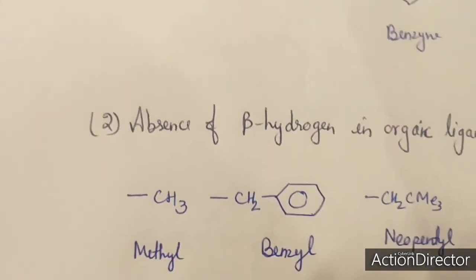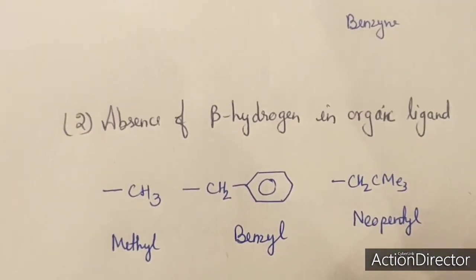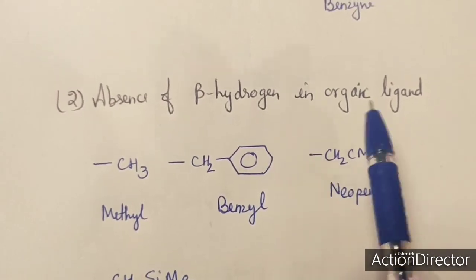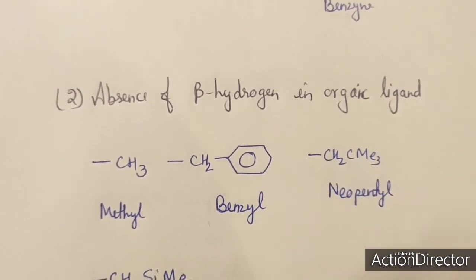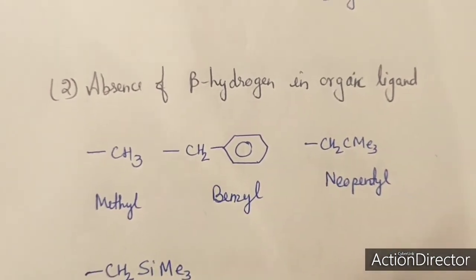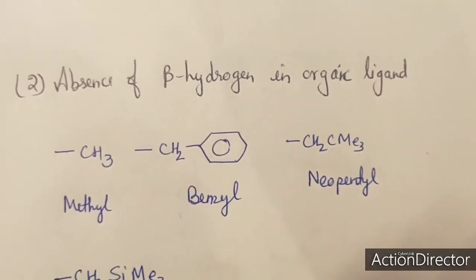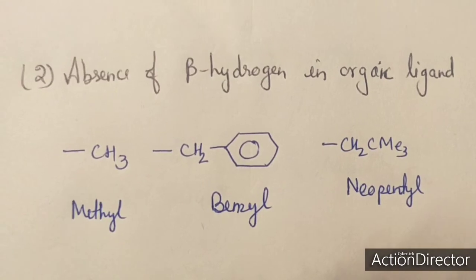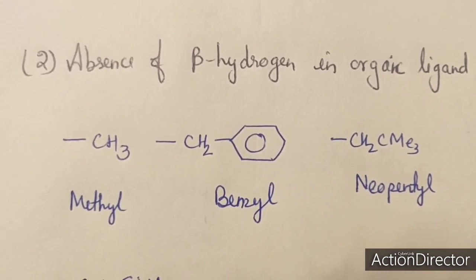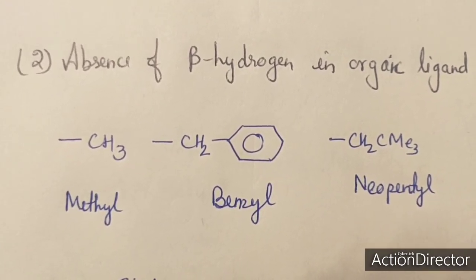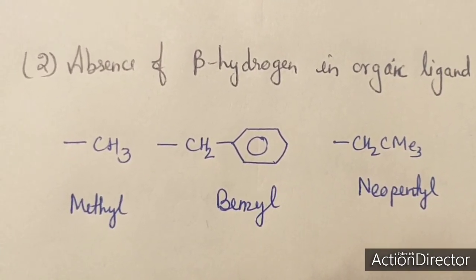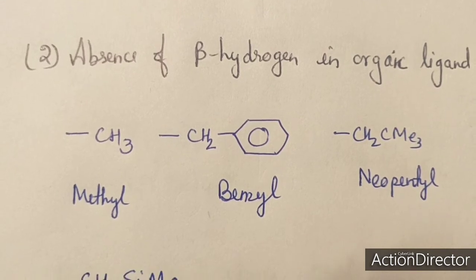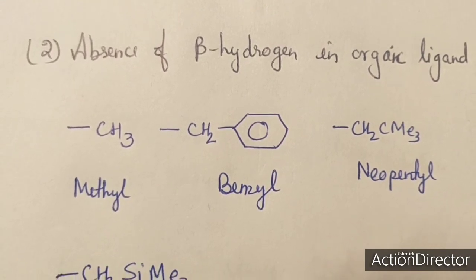The second suppression method is the absence of beta hydrogen in the organic ligand. If we remove beta hydrogen from the organic ligand, then no beta elimination can occur, and the compound becomes stable.